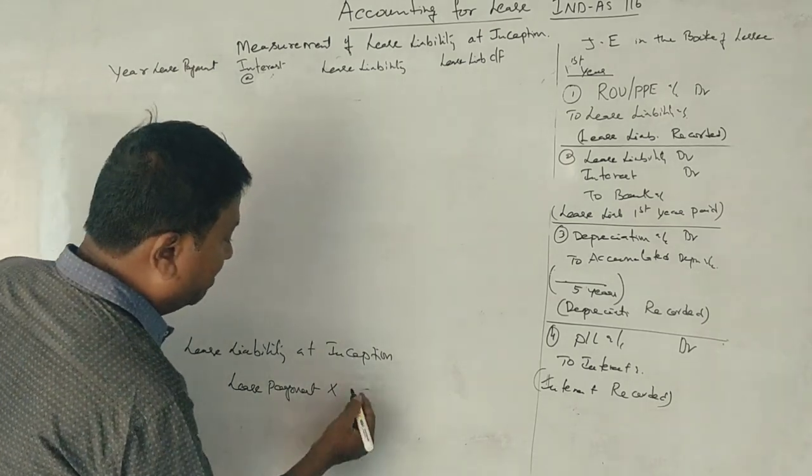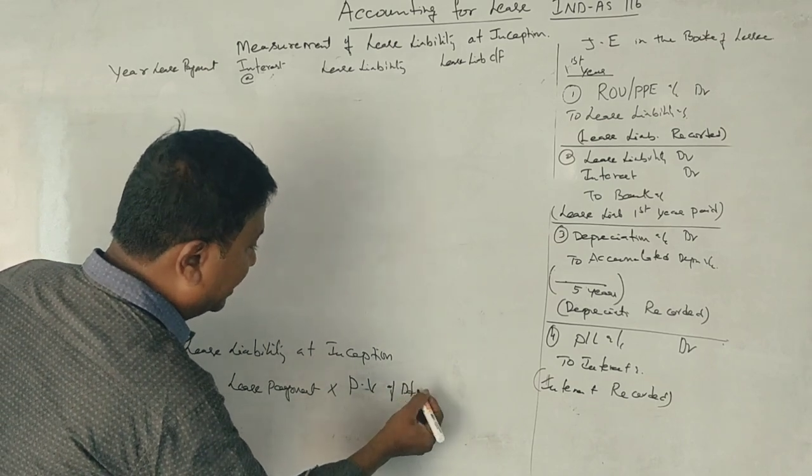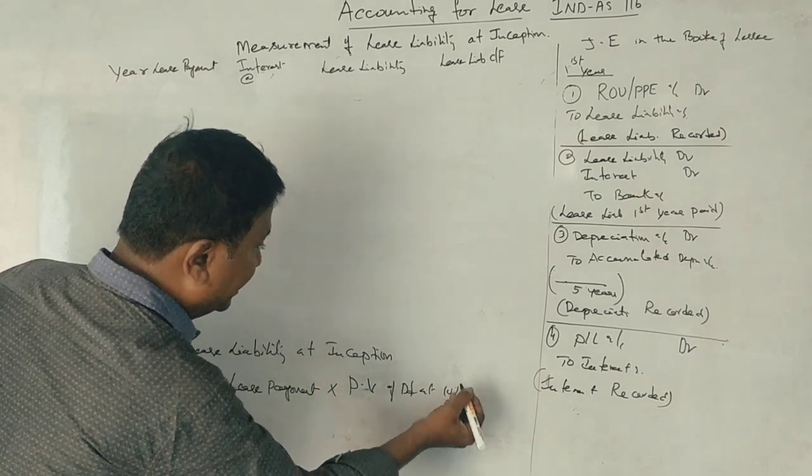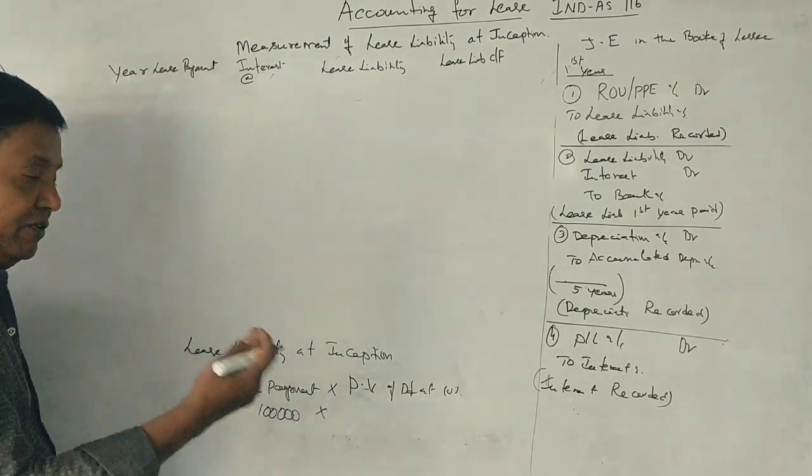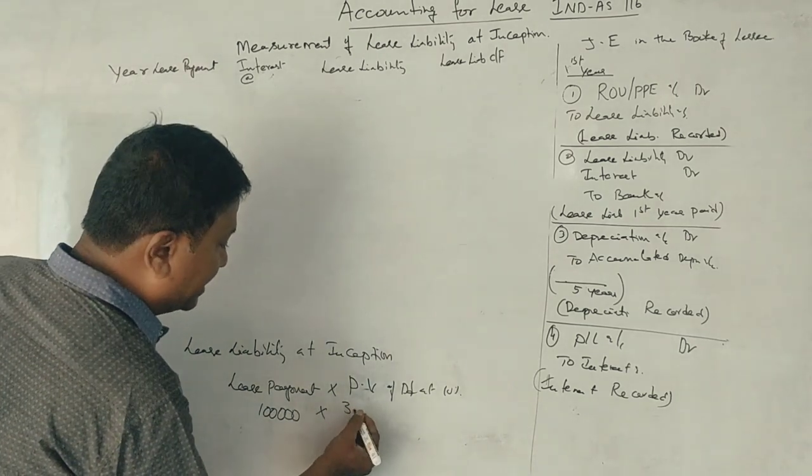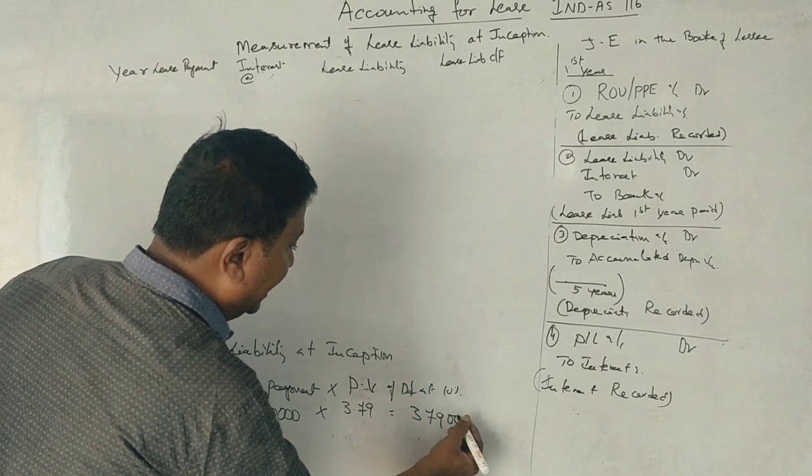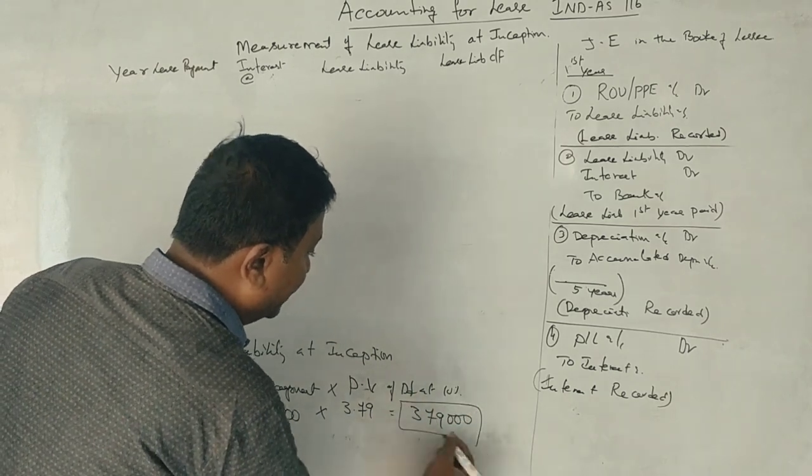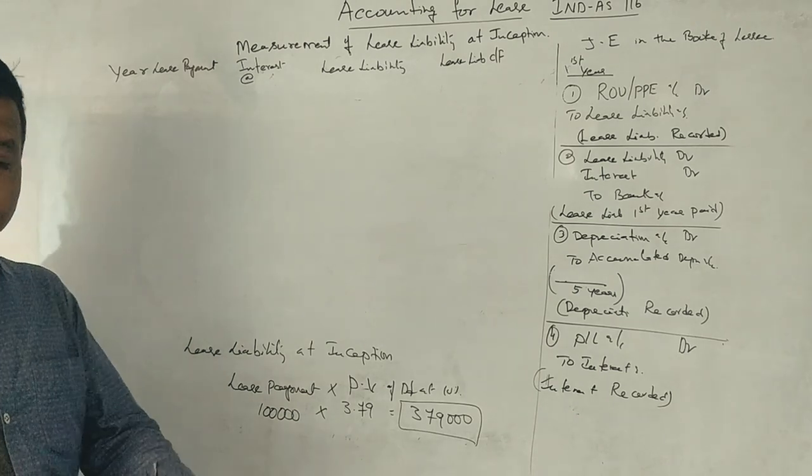So that means discount factor, present value of discount factor at 10%. See, 1 lakh rupees lease payment today, 5 years present value of discount factor at 10% is 3.79. So, 1 lakh into 3.79.